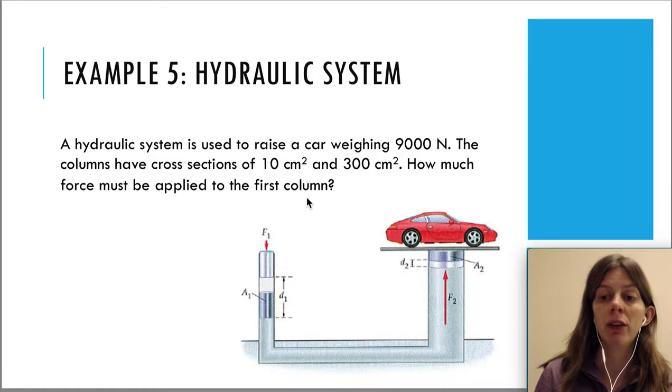The columns have cross sections of 10 cm squared and 300 cm squared. How much force must be applied to the first column? We just said that to get a larger force out we must have a bigger area.